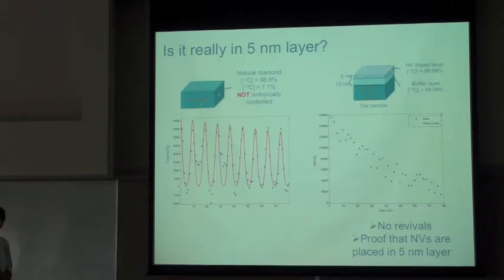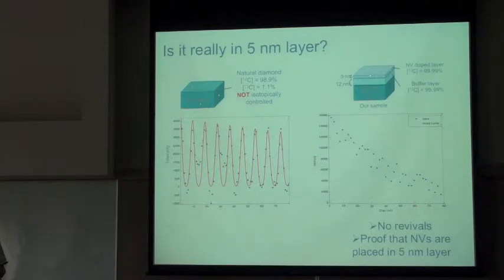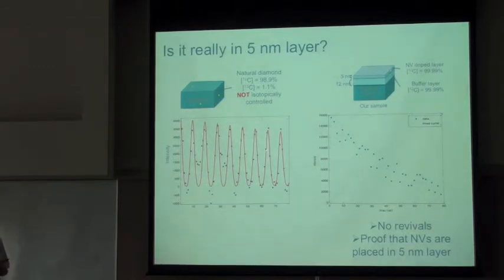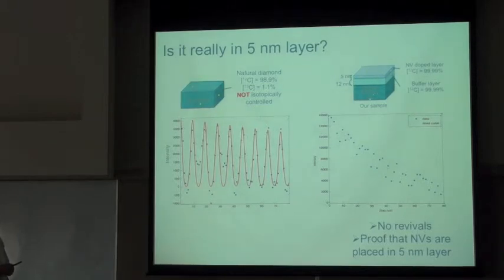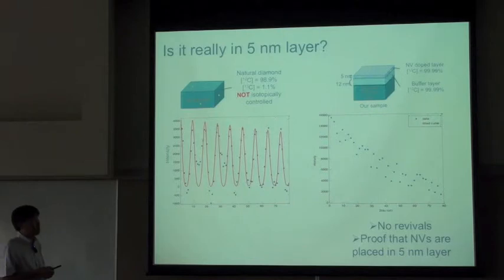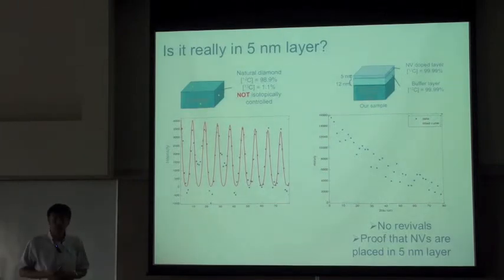The question arises whether such NV centers are really in the thin 5-nanometer layer. Here we made use of the fact that we are growing an isotopically pure carbon-12 layer. If you have carbon-13 around, the spin echo decay always comes with sinusoidal oscillation from the presence of carbon-13 around the NV center. All the NV spin echo decays did not accompany such oscillation, so we know that the NV centers are indeed placed in such a thin film.